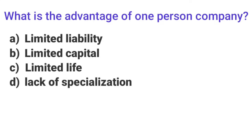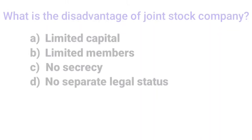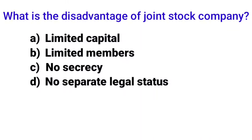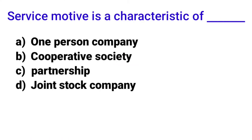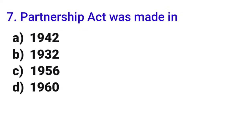The next MCQ relates to the year — options are 1942, 1932, 1956, 1960 — and the answer is 1932, which refers to the Indian Partnership Act of 1932.